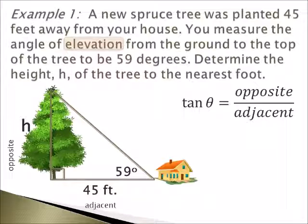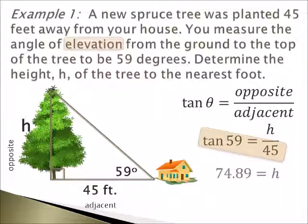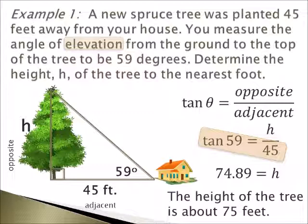So here we're going to think about SOHCAHTOA, and the only trig function that uses opposite and adjacent is your tangent trig function. Now we're going to take our information and substitute it into our equation. Theta will be replaced with 59, our opposite side is h, and our adjacent side is 45. Now we're going to cross multiply to get 45 times tan(59), which is equal to 74.89. However, since the question told us to determine the height to the nearest foot, we must round up. Therefore, the height of the tree is about 75 feet.